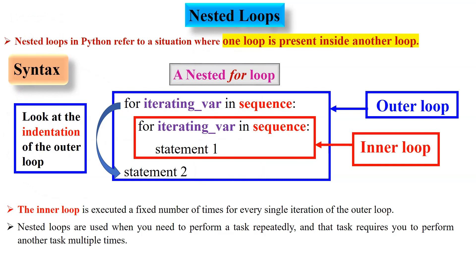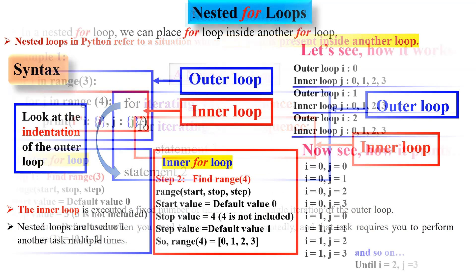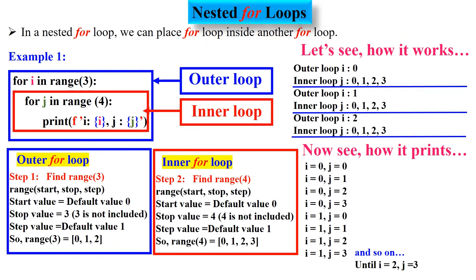Now we are going to discuss about nested loops. Nested loops in Python refer to a situation where one loop is present inside another loop — the inner loop is present inside the outer loop. The inner loop is executed a fixed number of times for every single iteration of the outer loop. Nested loops are used when you need to perform a task repeatedly, and that task requires you to perform another task multiple times. In a nested for loop, we can place a for loop inside another for loop.